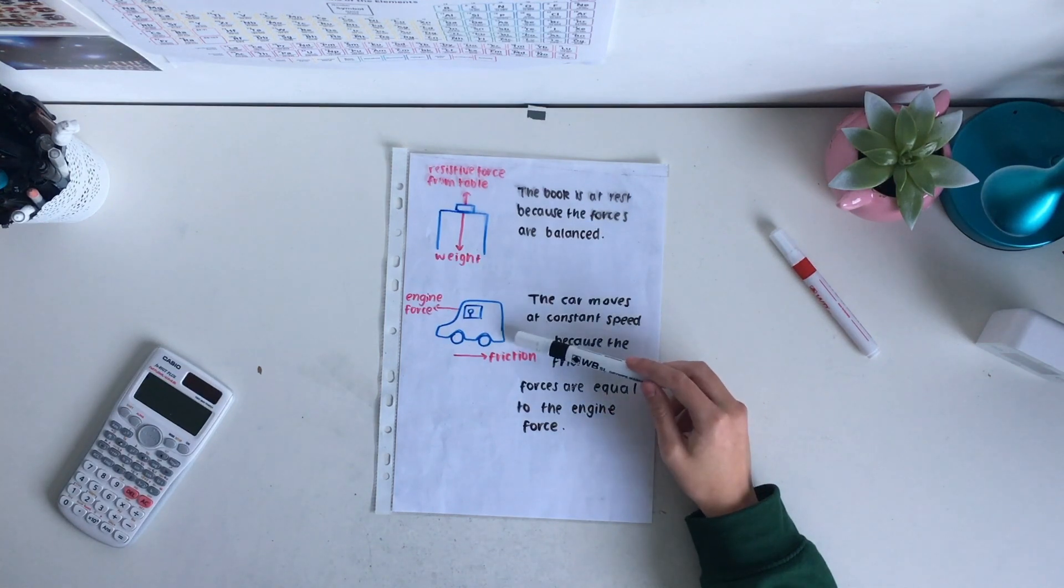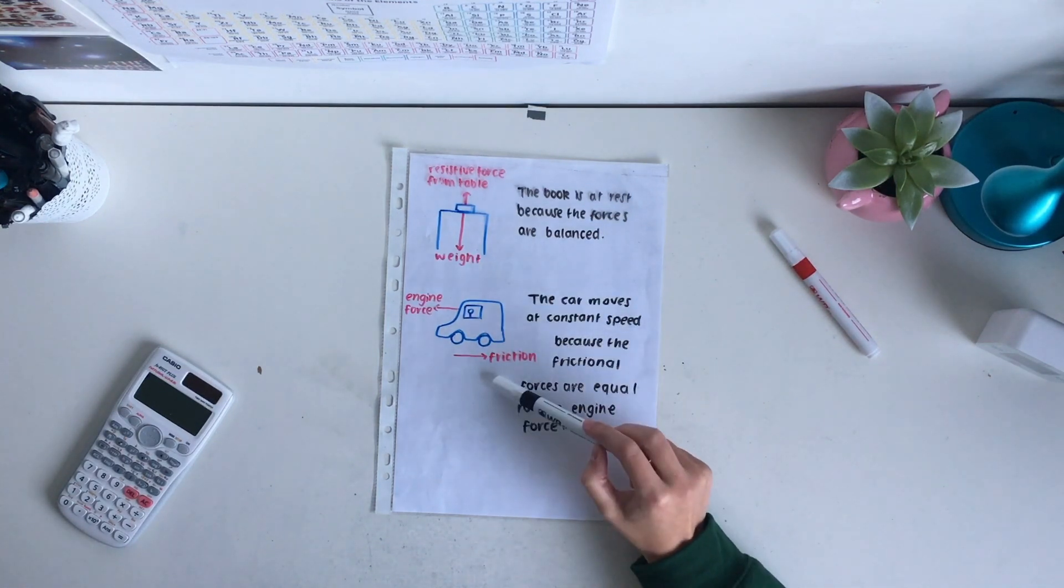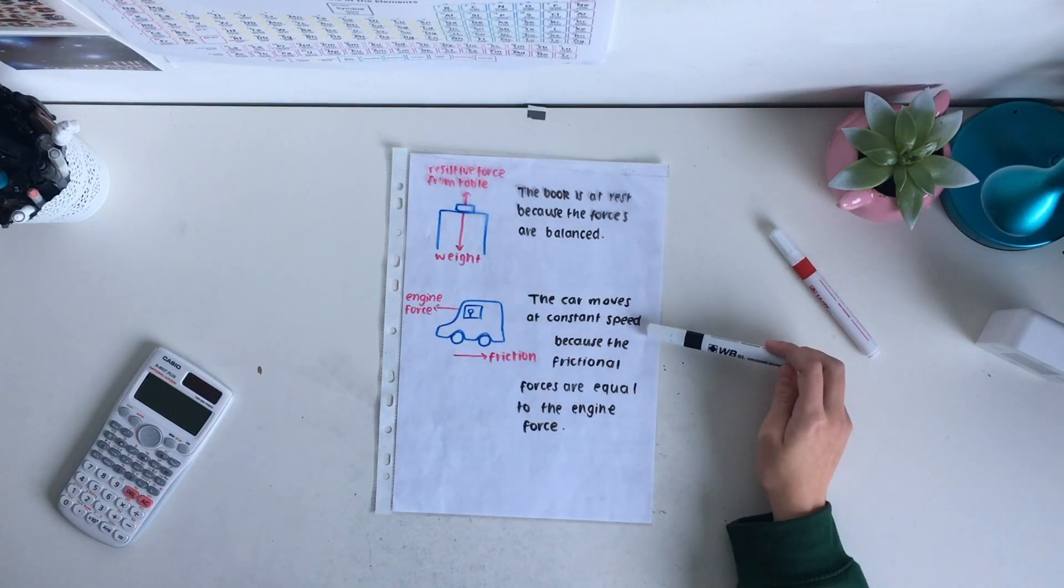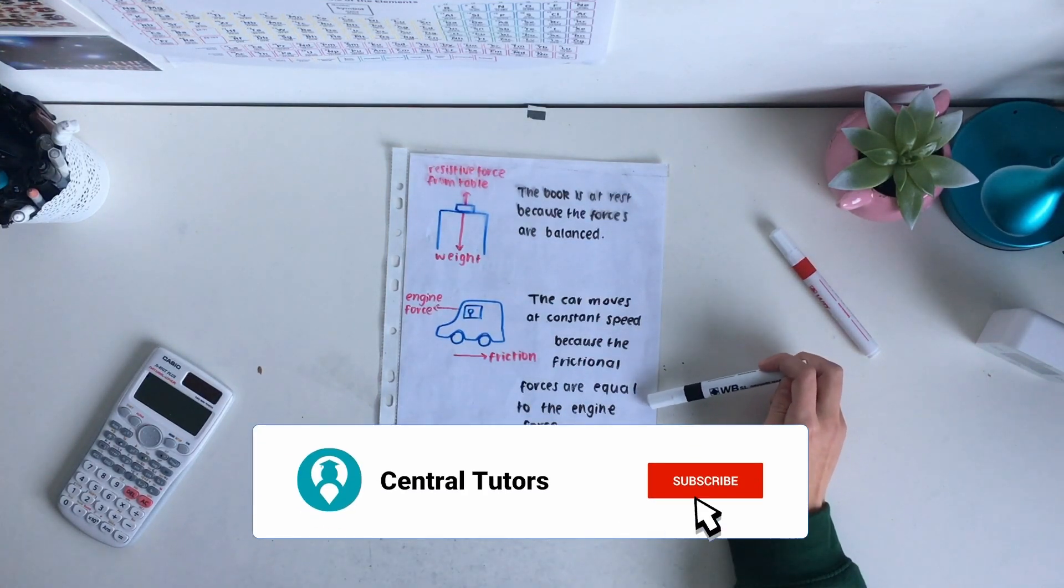A car moving at a constant speed forward has friction acting in the opposite direction to the engine's driving force. The car moves at a constant speed because the frictional forces are equal to the engine force.